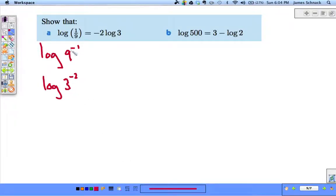3 squared is 9. The negative is already up there, so we have 3 to the negative 2. And, with our third logarithm law, can't I take this exponent down in front? And now, we are done.